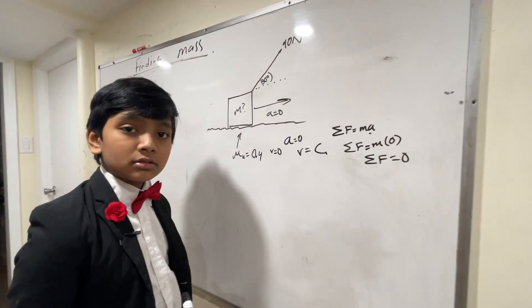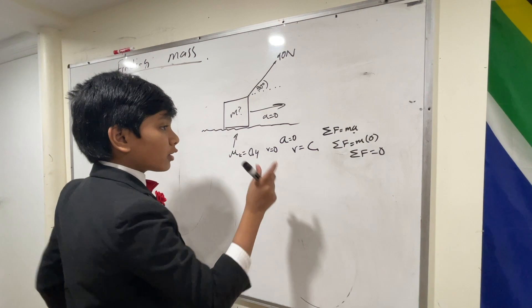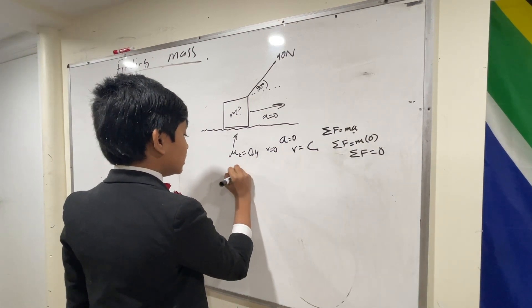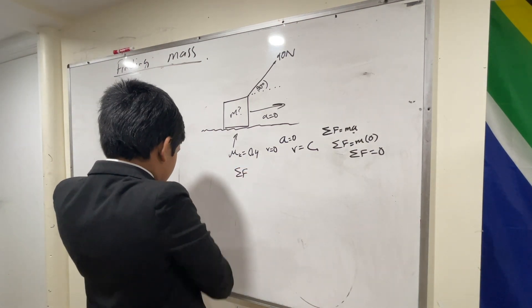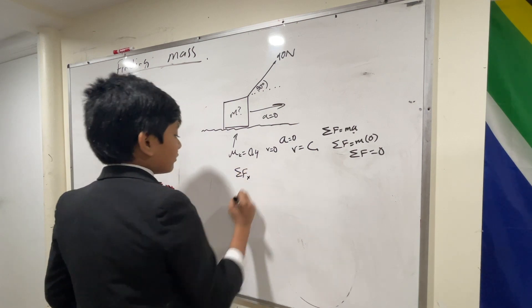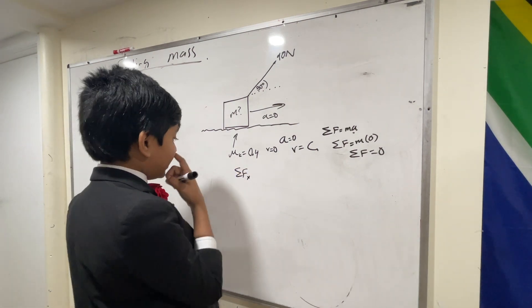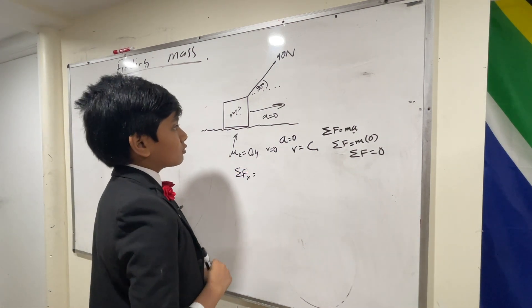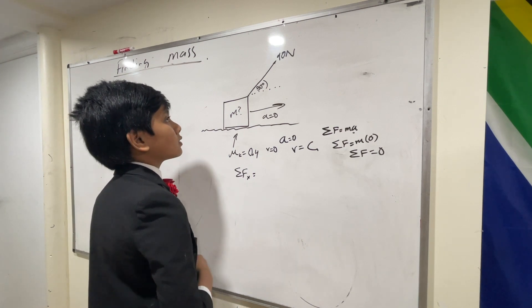So now, if we are working with acceleration equals 0 in this constant velocity, then let's say we have sigma fx over here, because we're only going to be working with the x for now.